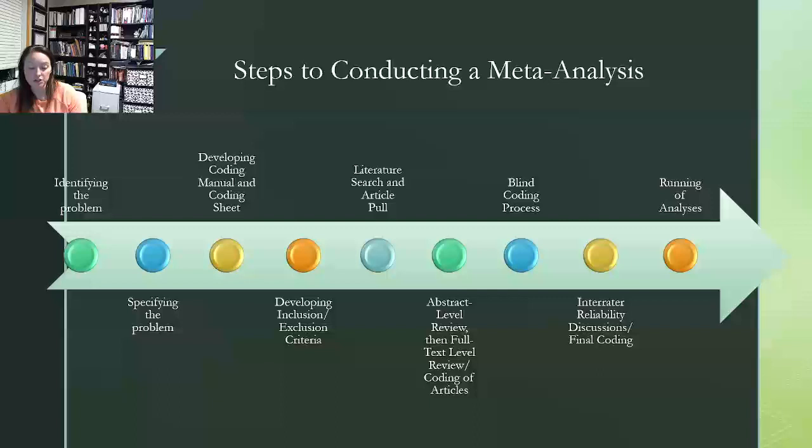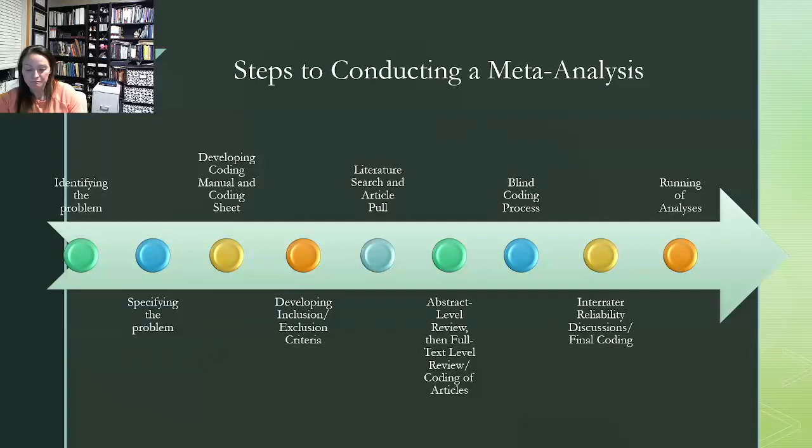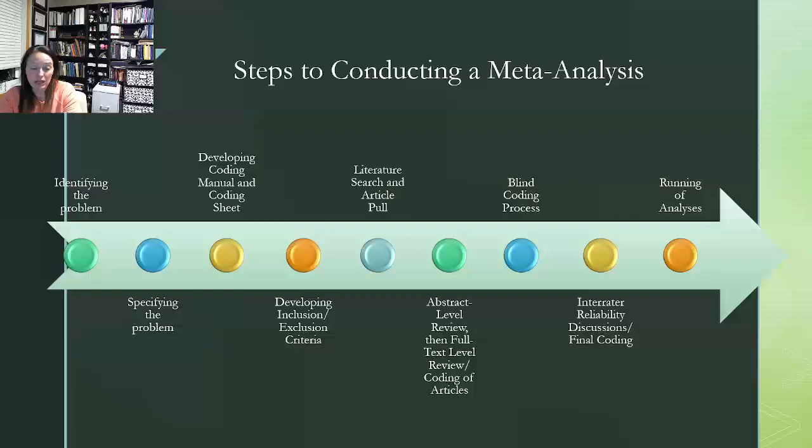And after articles have been initially coded by one coder, in order to ensure that our results are going to be reliable, we will use what's called a blind coding process. And so this adds reliability to our findings. So essentially what this means is one person is going to code the articles without getting help from anybody else. And then a second person is also going to code those same articles without seeing what the first person coded and without getting help from anybody else either. So they're going to be coding blind from one another. And they're going to hold on to their scores until they compare them at a later date.